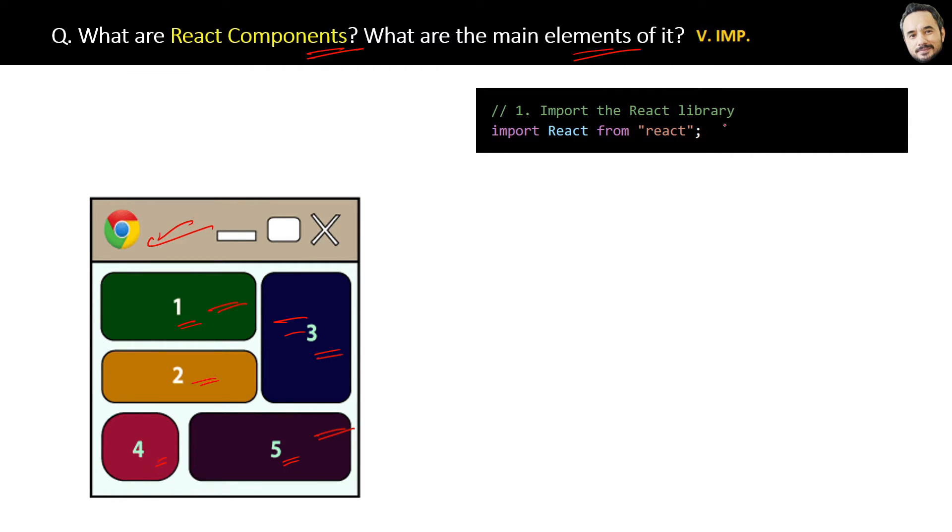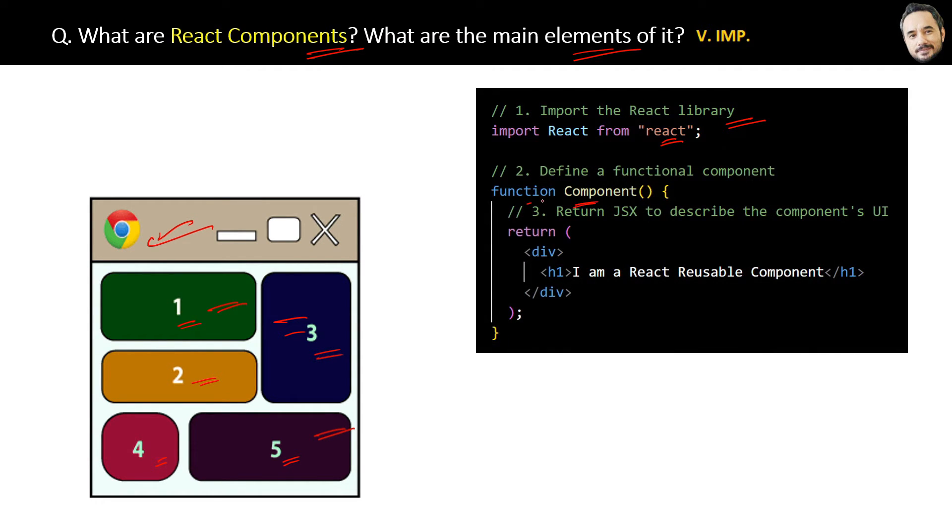First, the React library is imported, and then a functional component is defined that returns JSX, which is then rendered in the UI. Don't worry, I will cover JSX questions separately.